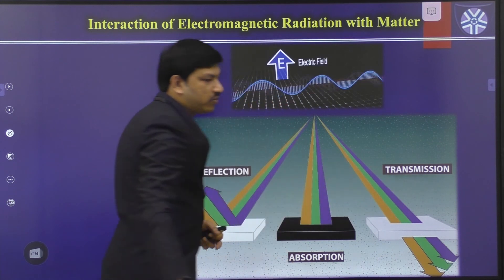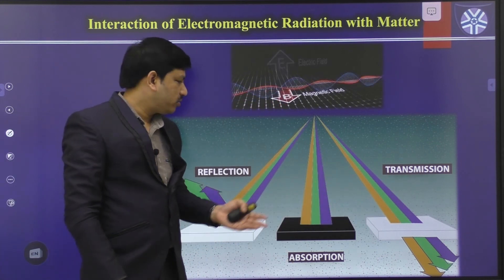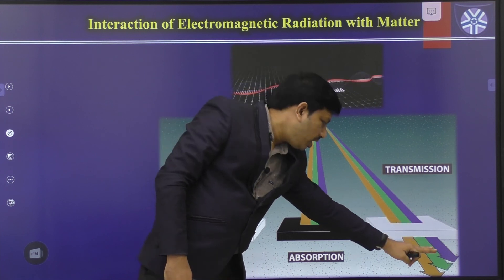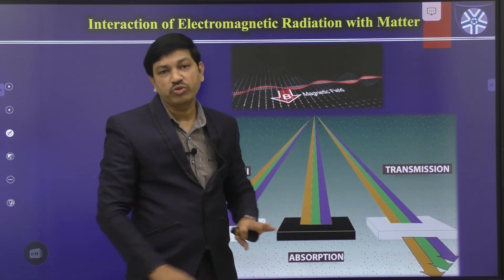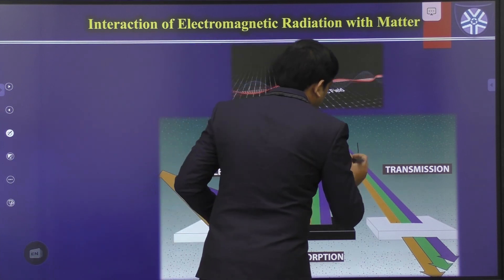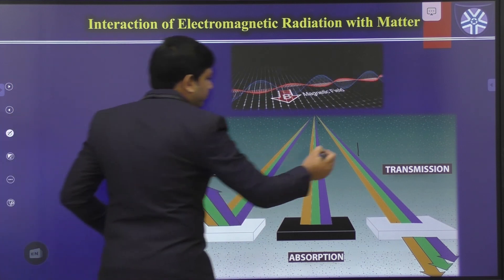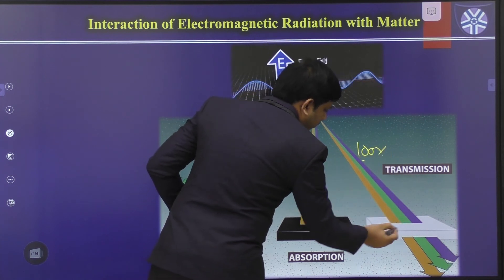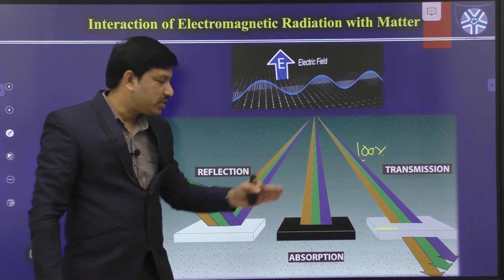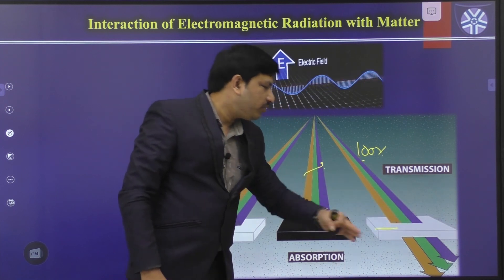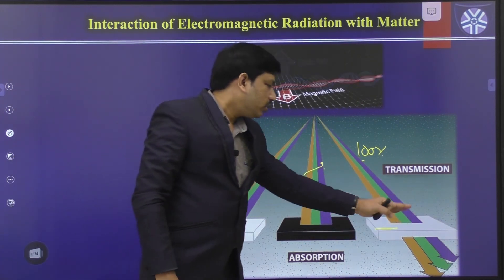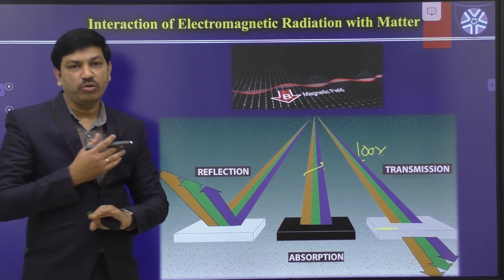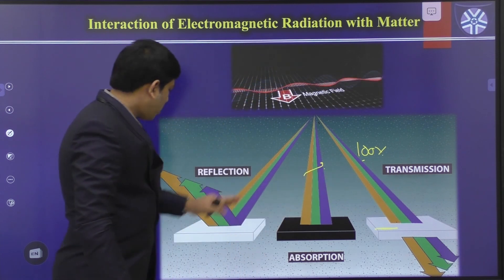There are three different processes that can occur. First, if the unknown compound does not absorb any light, all the light passes straight through — this is called transmission. The radiation enters the medium and comes out with the same intensity, meaning there is no absorption of light. For example, if we send 100% intensity light toward an unknown compound and it comes out with the same intensity, that is transmission.